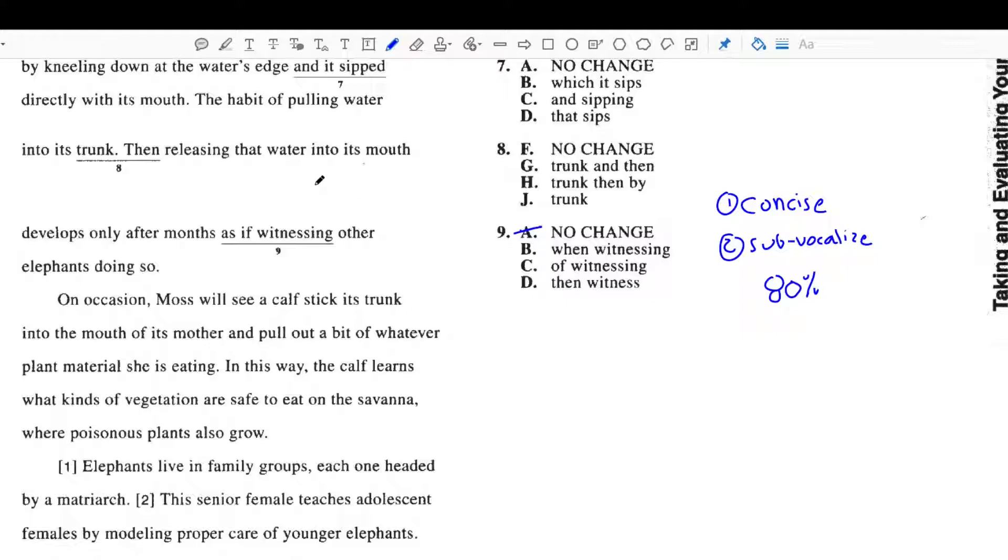Okay, so let's try B. Into its mouth develops only after months when witnessing other elephants doing so. Water into its mouth develops only after months of witnessing other elephants doing so. Or, water into its mouth develops only after months, then witness other elephants doing so.